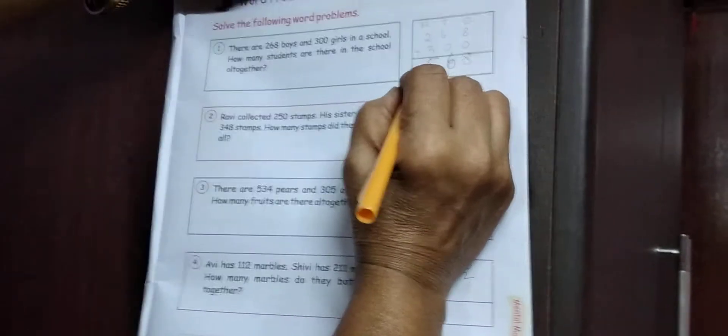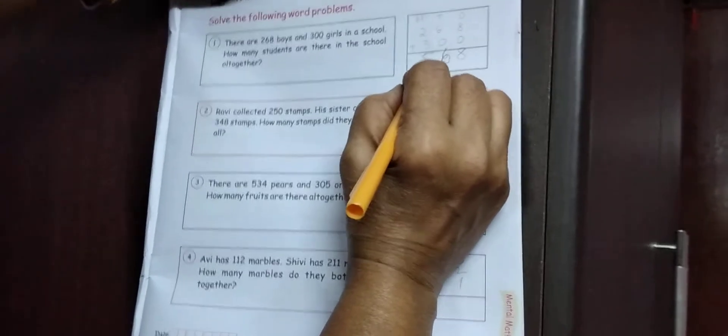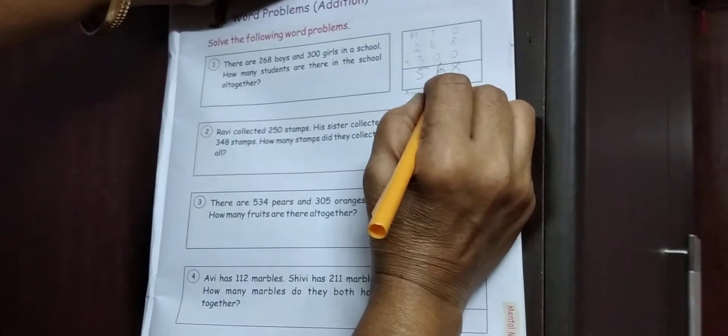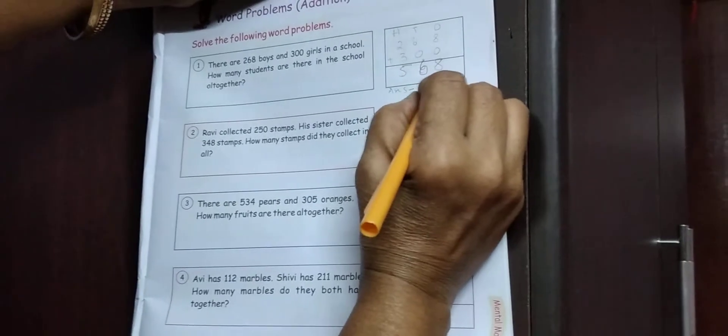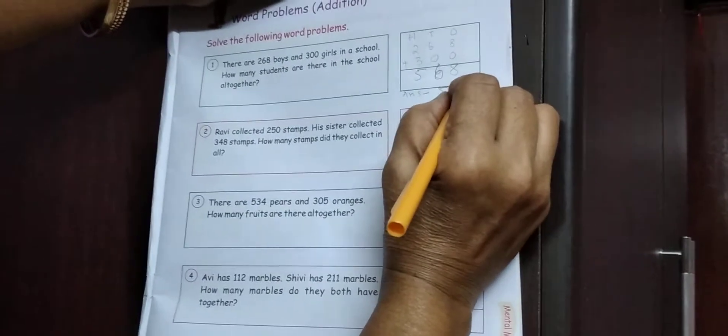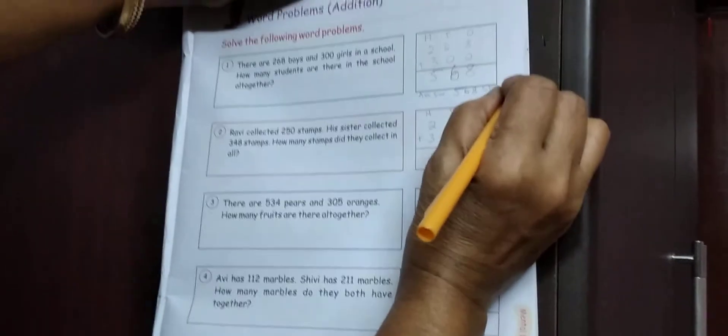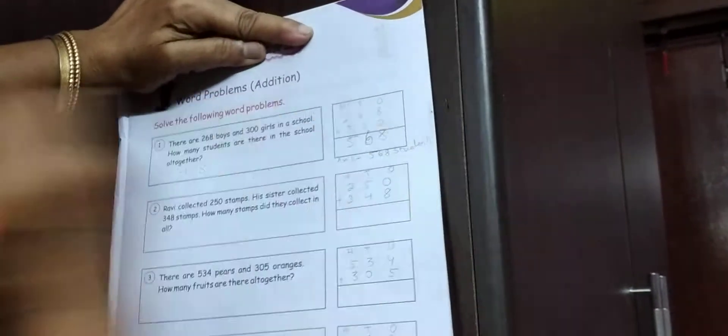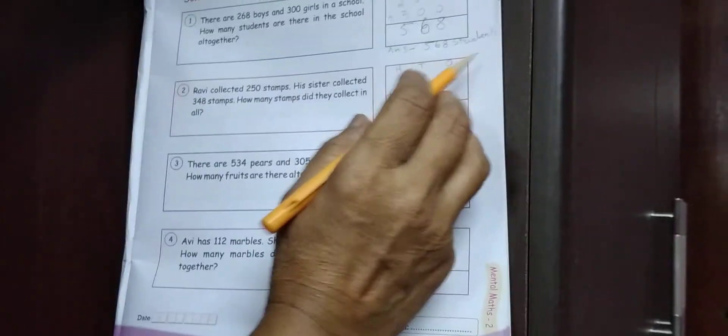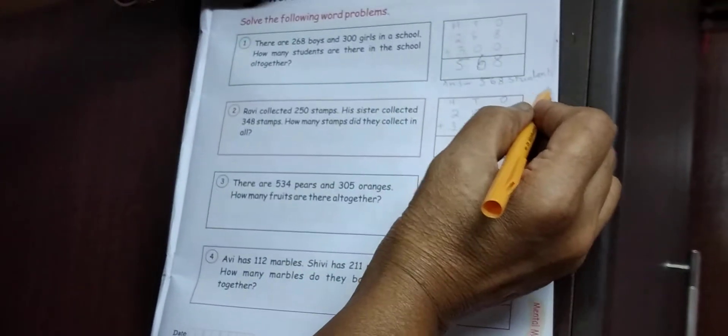568. Answer, एसे लिखोगी. A, N, S. Answer, 568. Students. S, T, U, D, E, N, T, S. Students. एसे करना चाहिए. कंप्लीट हो गया. एक स्कूल में 268 boys और 300 girls है और together 568 students.